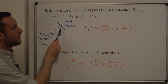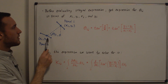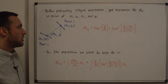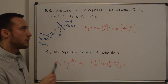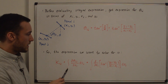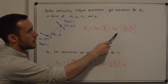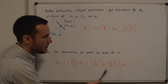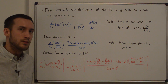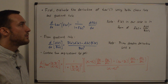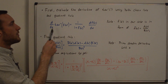Theta_ij is the angle between the horizontal and the line connecting the control points of panel i (x_i, y_i) and panel j (x_j, y_j). This angle equals the inverse tangent of the opposite over adjacent: the y-distance yi minus yj over the x-distance xi minus xj. The expression we want to solve for is k_ij, the geometrical integral for the vortex panel method for the normal velocity, equal to the integral of d theta_ij / d n_i dsj.